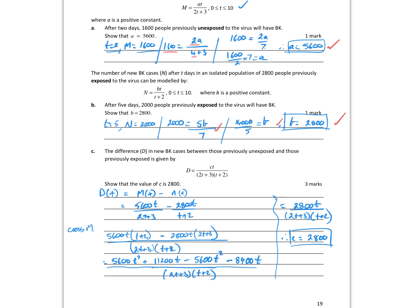The difference in new cases between these two groups is given as D of T. Show that the value of C is 2800. M of T minus N of T is the difference — because it's a show, I can't take any shortcuts. You can expand things on your CAS to get from one line to the next. Despite how messy it seems, the 5600T² terms cancel, 11200 minus 8400 leaves a difference of 2800. It actually isn't too bad — it's just getting used to working with expressions containing pronumerals.